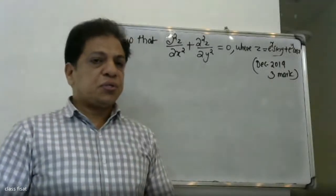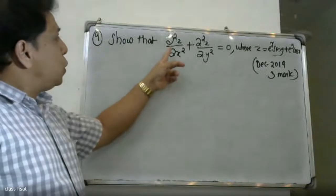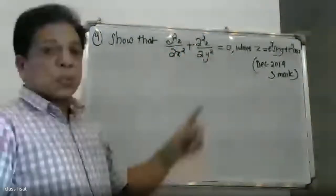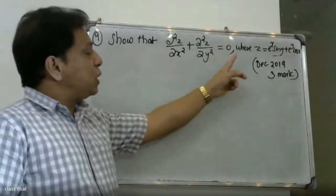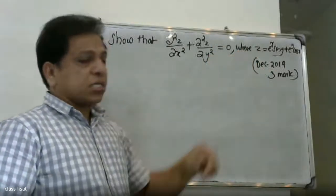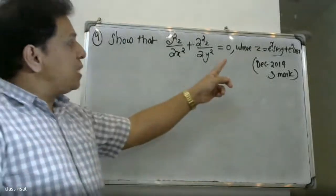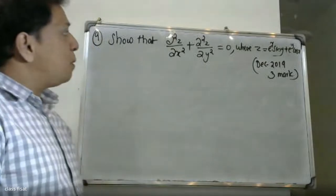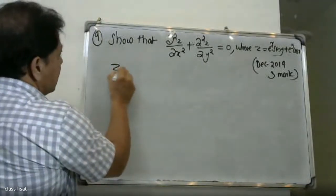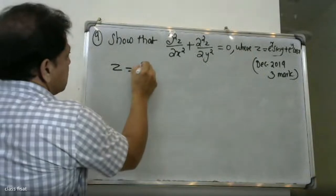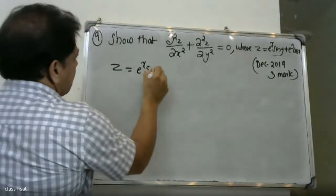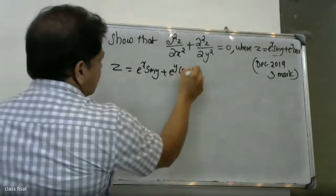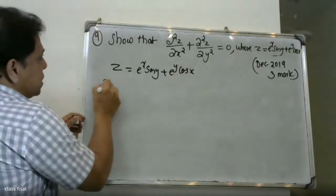Good morning students. Show that those colors in the way: x square plus those colors in the way y square equal to 0, where z is equal to e raised to x sin y plus e raised to y cos x. So then, dou z divided by dou x — we are differentiating partially with respect to x.